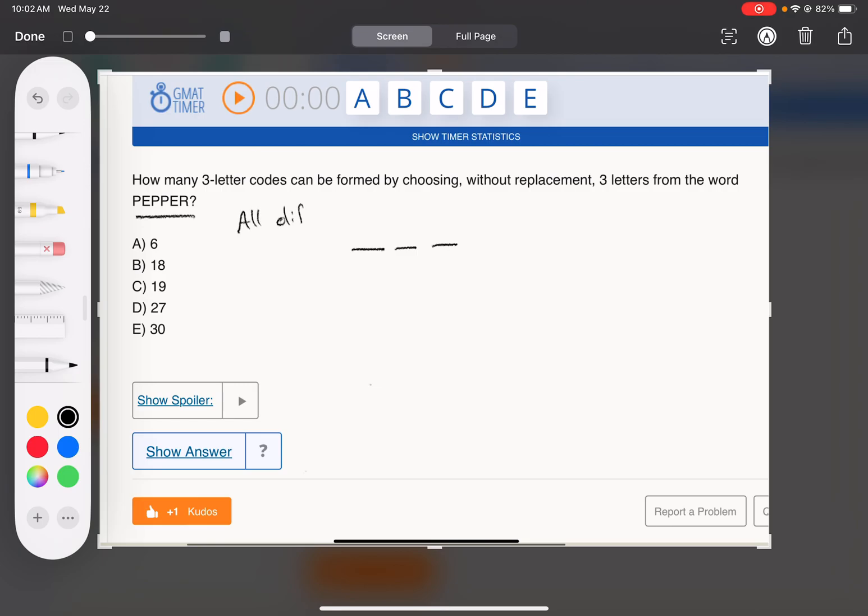The first scenario is where I pick all different letters. I split it into scenarios that are differentiated by whether we use a repeating letter and how many. So in this case, there's a case where we use all different letters, there's a case where two are the same and then one different from that, and then there's a case where all the letters are the same.